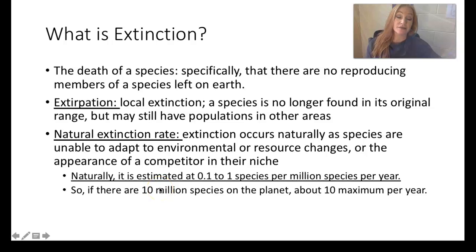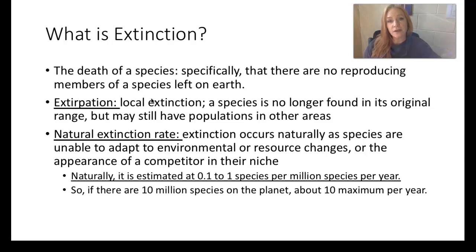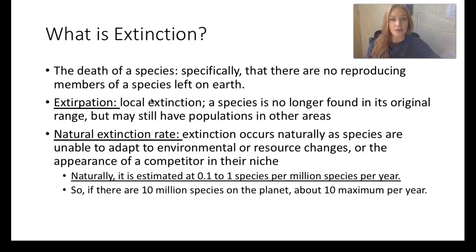Let's talk about what extinction is first of all. Extinction is technically the death of a species — the end. That means there are no reproducing individual members of a species left on Earth, and that can happen on a global scale. It can also happen on a local scale, and we call those local events extirpation. That means a species is no longer found in a local population or community, but it might still be alive in other parts of the world in its natural habitat. That's extirpation.